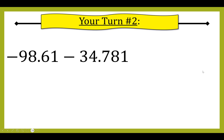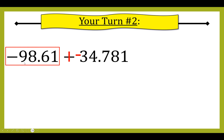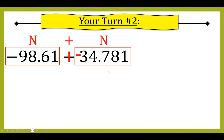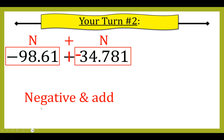Let's look at your turn number two — pause the video. Here I have negative 98.61 minus 34.781. It's another subtraction problem, so I turn it into addition by adding the opposite. I box my numbers: negative 98.61 and negative 34.781 — a negative plus a negative. My answer will be negative and I'm going to add.